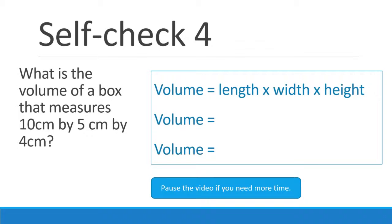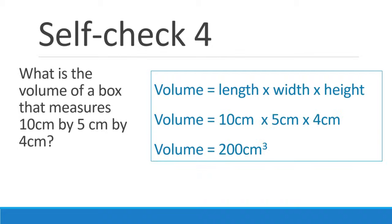Okay, those were easy, I'll admit it. Let's take a look at a few that maybe take a little bit more work. If you have a box that measures 10 centimeters by 5 centimeters by 4 centimeters, what's its volume? Length times width times height — use the pause button if you need just a little bit of time. 10 centimeters times 5 centimeters times 4 centimeters is 200 centimeters cubed. Notice we multiplied centimeters three times, so our unit is centimeters with a superscripted three.